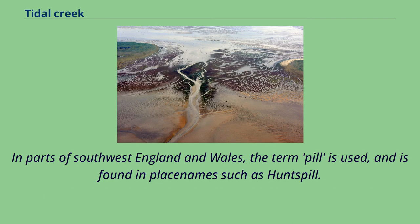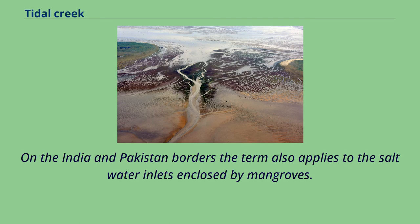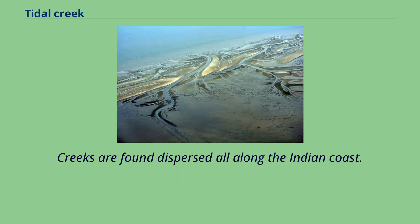In parts of southwest England and Wales, the term 'pill' is used, and is found in place names such as Huntspill. A narrow channel between islands in the Florida Keys is known there as a creek. On the India and Pakistan borders, the term also applies to the saltwater inlets enclosed by mangroves. Creeks are found dispersed all along the Indian coast.